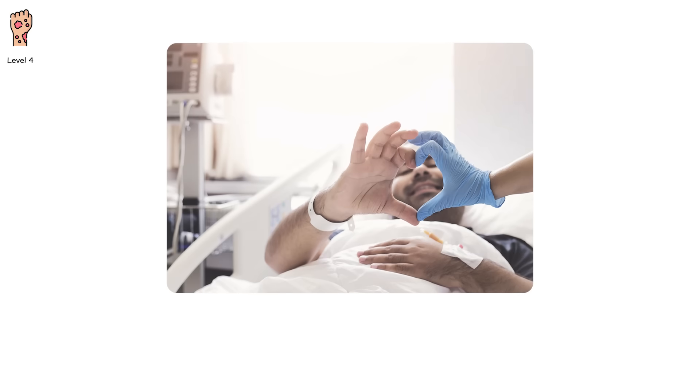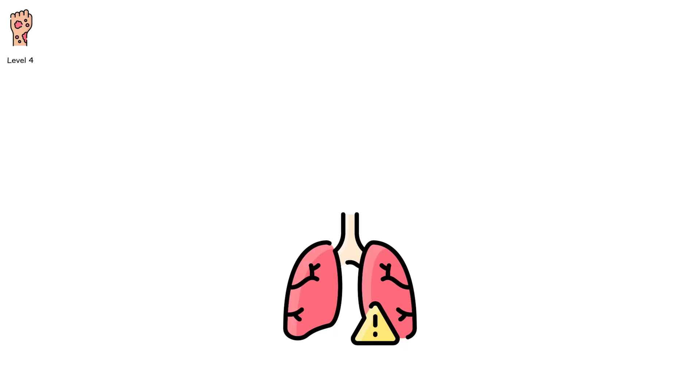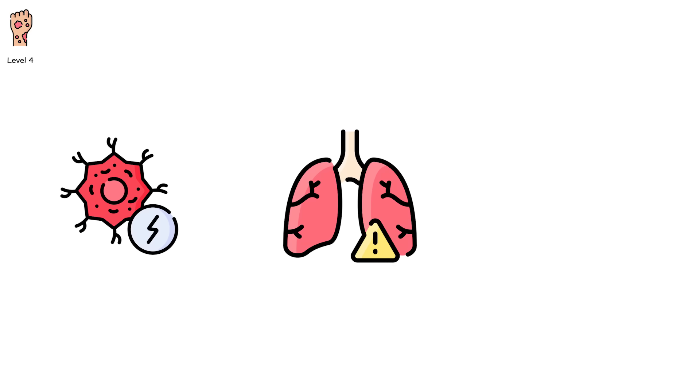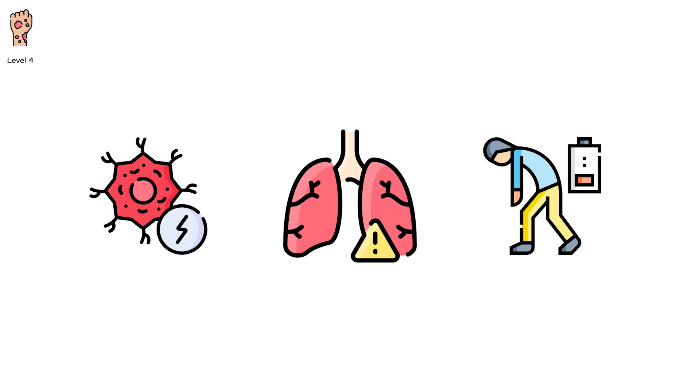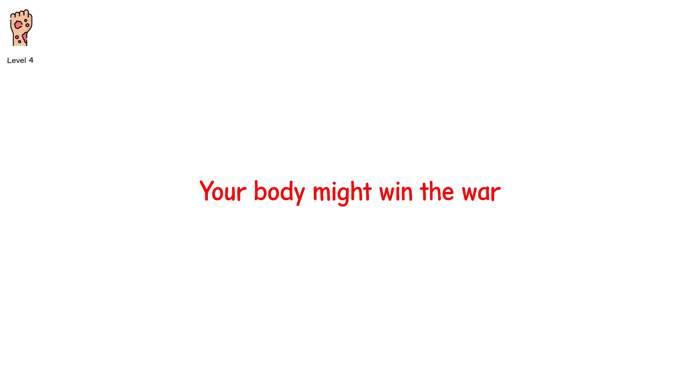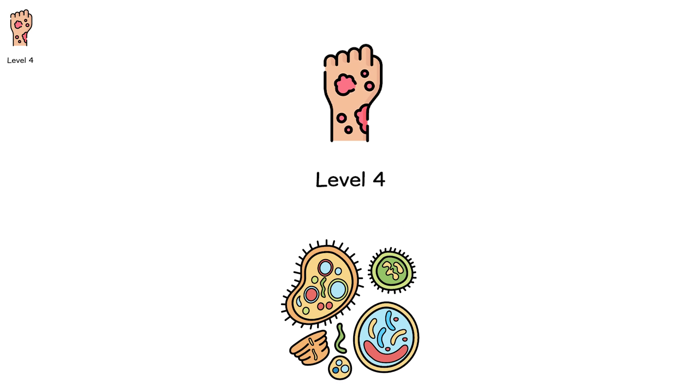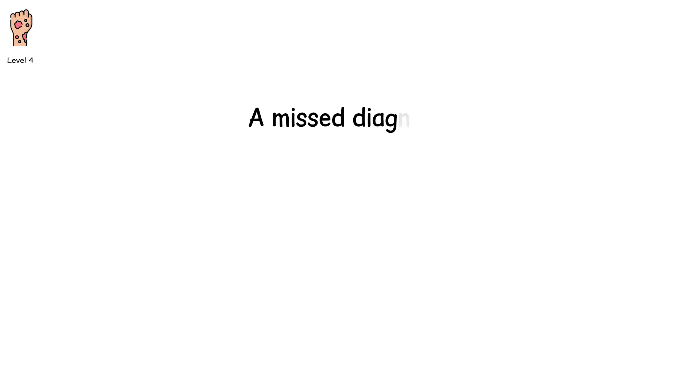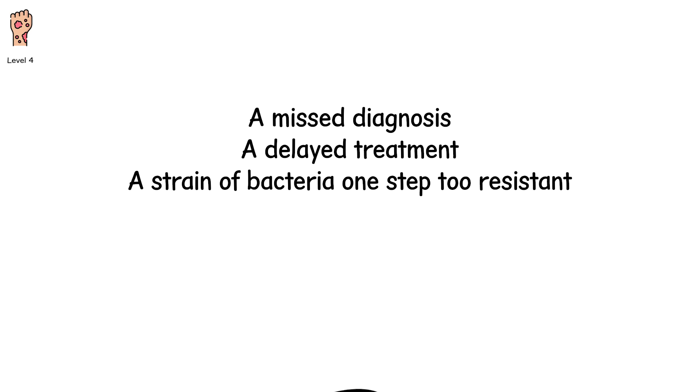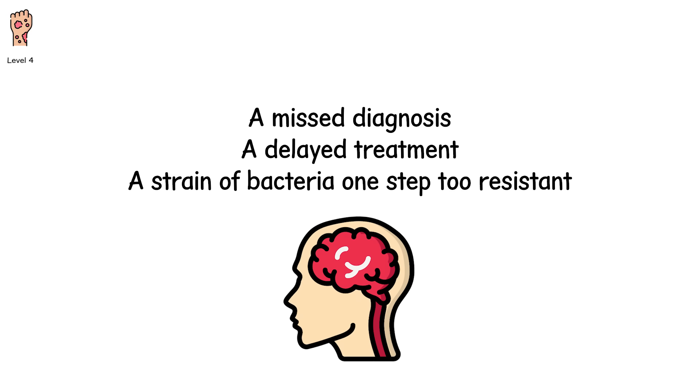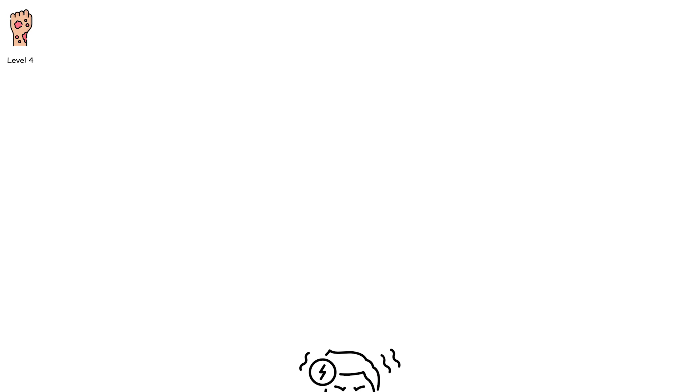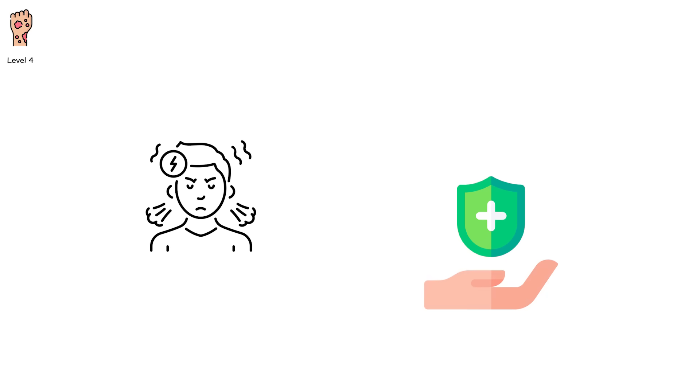Even after recovery, there may be lasting damage. Scarring in the lungs. Nerve pain. Lingering fatigue. Your body might win the war, but not without casualties. Level 4 reminds us that biology is delicate. It doesn't take much. A missed diagnosis. A delayed treatment. A strain of bacteria one step too resistant. To push the system over the edge. Know your medical history. Chronic conditions can turn minor infections into major threats. Prevention and early care aren't just helpful. They're life-saving.